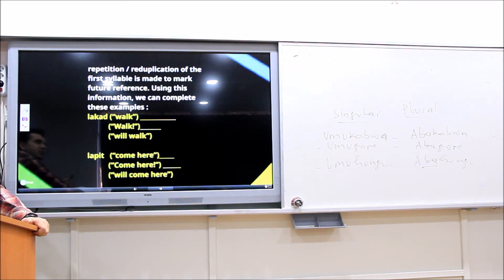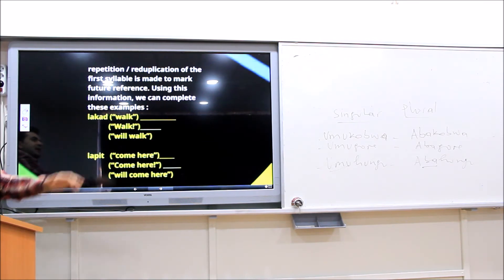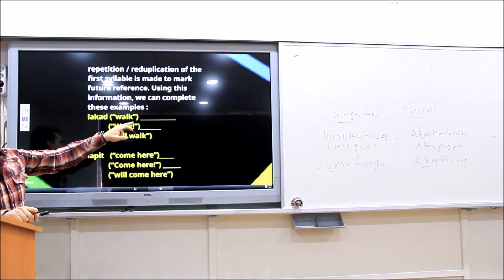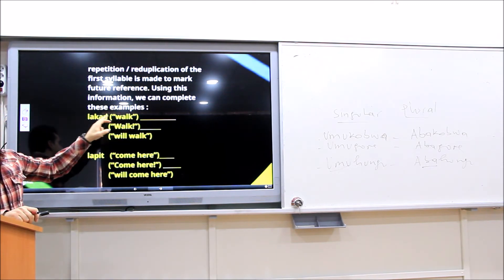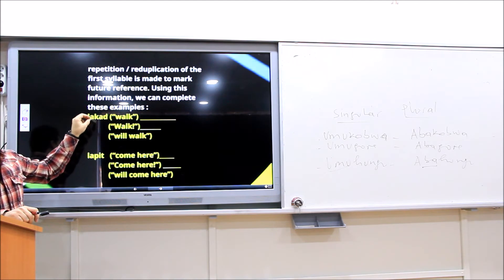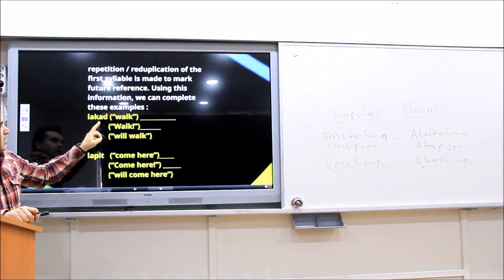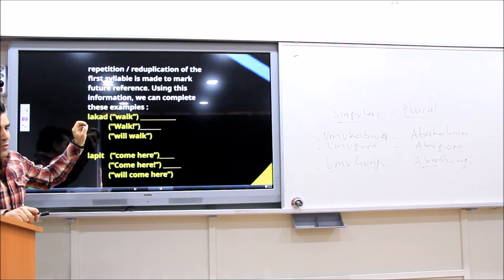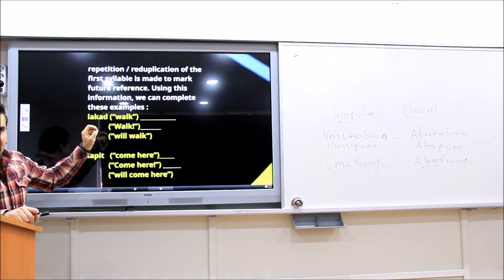Using this information, we can complete these examples. For example, 'lakat' — the imperative form would be 'lumakat' with the '-um-' infix inserted. And the future form would be 'lalakat' — reduplication of the first syllable.